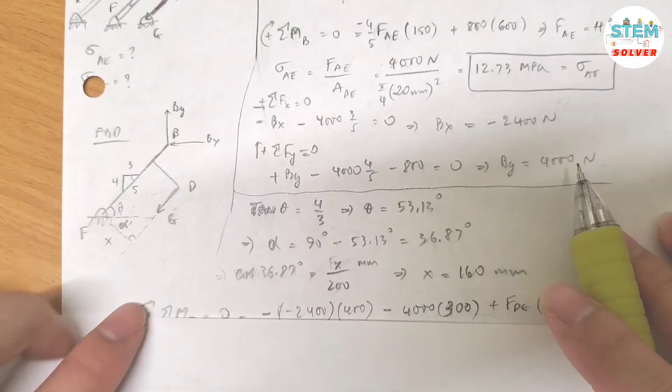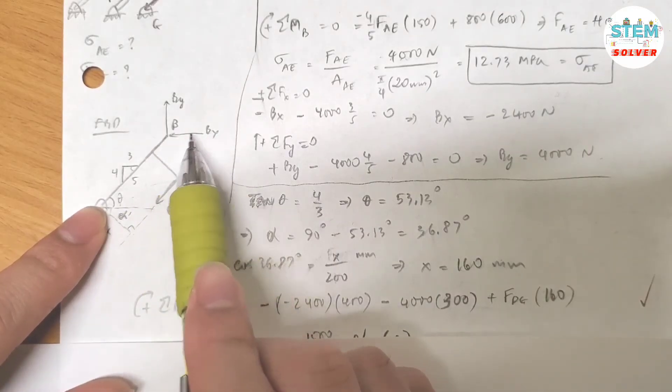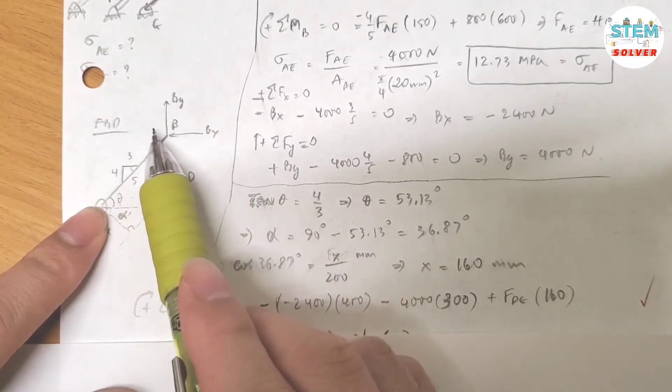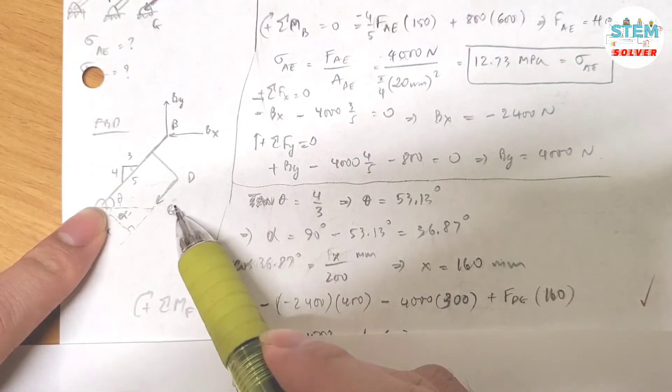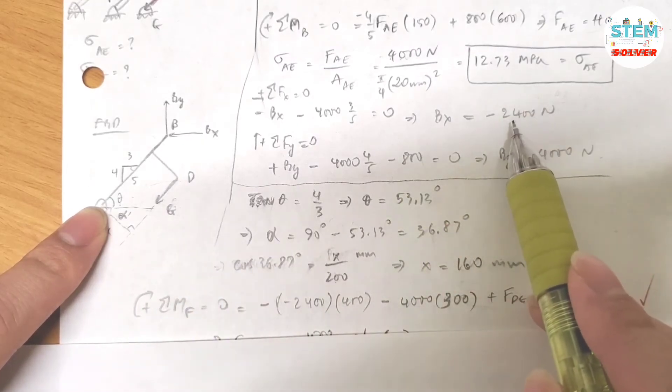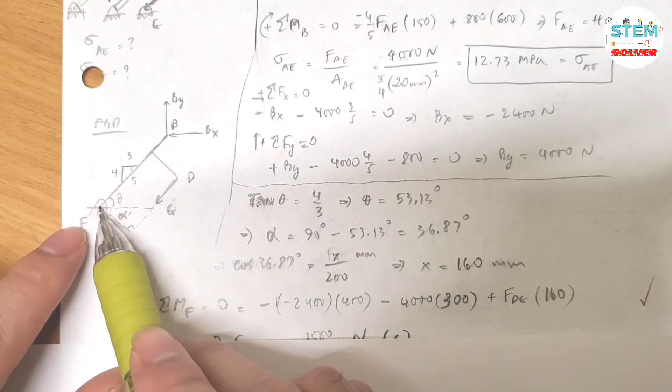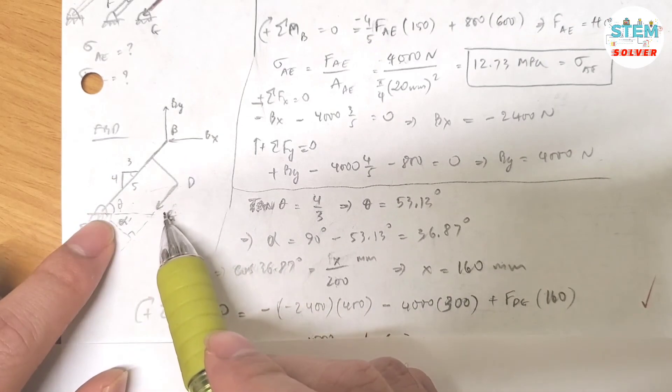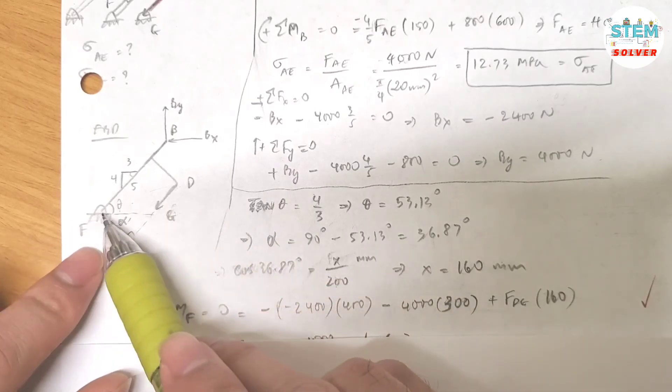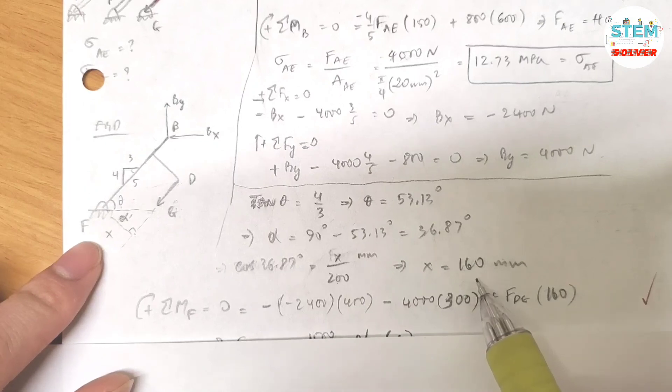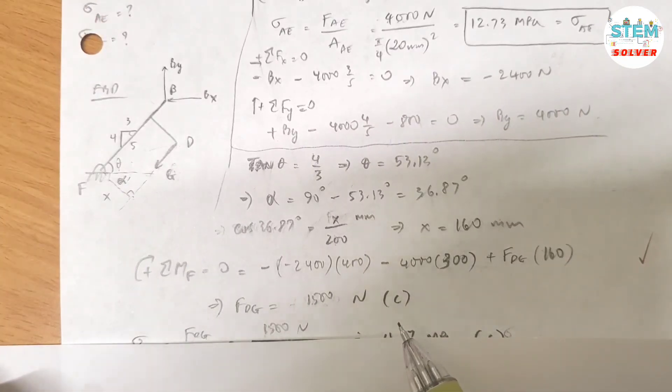Now I know the distance, now I can take the moment about F. So the moment about F is equal to, assume clockwise is positive. So this one pointing to the left, I have negative Bx times the distance from here to here is 400 mm. And Bx is negative 2400. Then for By, it's counterclockwise, so minus 4000 times the perpendicular distance from F to B is 300. So I have 4000 times 300, plus FDG times the perpendicular distance from here to here, which is 160, which is the distance we just found. And set this equal to 0. Then solve for FDG, I got 1500 N, and it is compressive force.